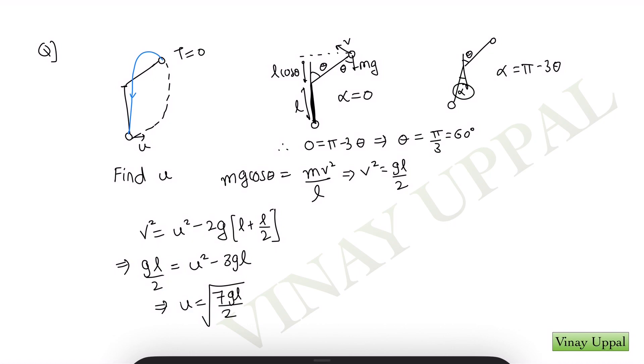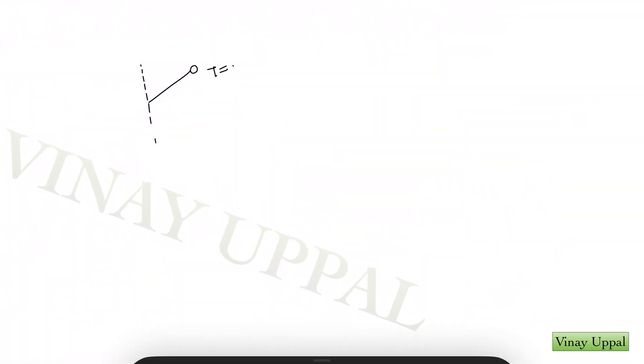Now let me just show you a brief outline for the proof. So the string becomes slack at an angle theta. If I write the force equation towards the center, I'll have mg cos theta is equal to mv squared by L. So I'll have the value of v. And this is a projectile motion. You can see the angle with the horizontal is theta. And here the string becomes taught again at an angle alpha with a downward vertical.